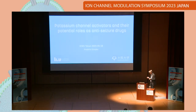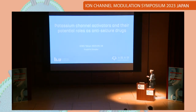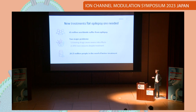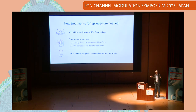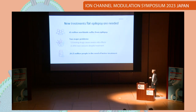I will talk about ion channel activators and their potential roles as anti-seizure drugs. To start with epilepsy: 65 million people worldwide suffer from this disease. There are two major problems — existing drugs cause severe side effects for many patients, and 30% of patients have seizures despite treatment. This means 20 to 25 million people need better treatment, so there is clear reason to search for new anti-seizure drugs.